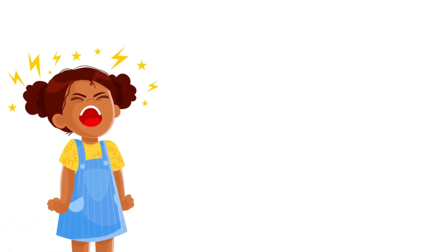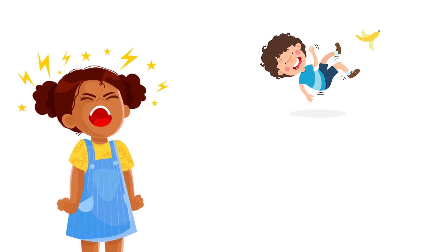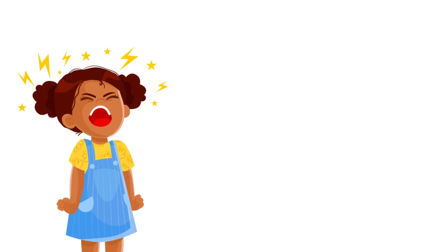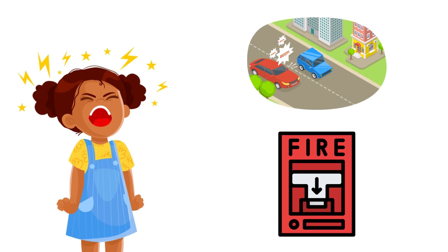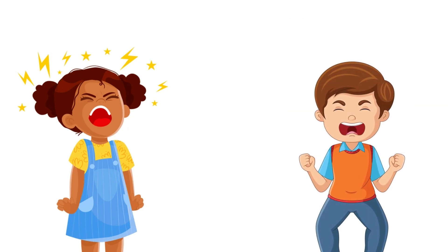Samantha would scream whenever there were loud noises, such as another child falling off a chair or other children yelling. However, she did not react this way to other loud noises, such as a car horn or a fire alarm. In this case, we might form a hypothesis that Samantha is imitating the emotions of others.